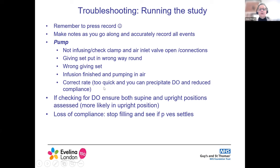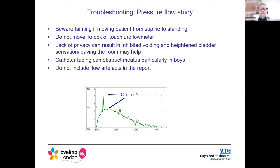Fill rate has already been mentioned. If you're looking for detrusor overactivity, make sure you bring the child upright because you're more likely to see DO in that position. If you get loss of compliance, stop filling and see if your P-VES settles to check you're not filling too quickly. With a pressure flow study, if you're bringing the patient from supine to standing, beware fainting — particularly in an inhibited teenager. Lack of privacy can result in inhibited voiding and heightened sensation; you may need to leave the room. Don't move, knock, or touch the uroflowmeter, don't block the urethral meatus with tape, and don't include knocking artifacts in your report.